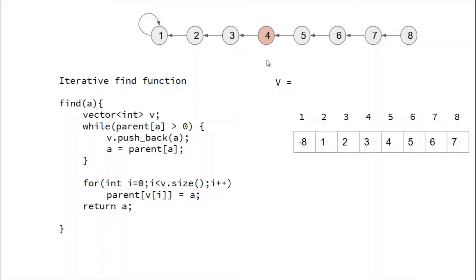For example, find(4) causes 4 to call 3, 3 to call 2, and 2 to call 1. The calls end at 1 since it is the actual parent. On the return path, 2, 3, and 4 each need to update their parent pointers. To track which elements need updating, we use a dynamic array — a vector of integers — to store the nodes encountered along the path.